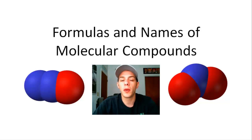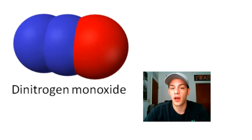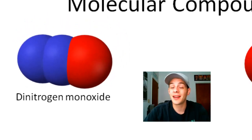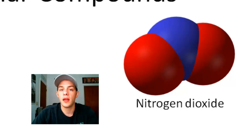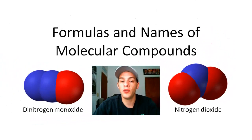I'd like to start by talking about two molecules on screen. The molecule on the left is dinitrogen monoxide. Each molecule of dinitrogen monoxide consists of two nitrogen atoms, shown here in blue, and one oxygen atom, shown here in red. The molecule on the right is nitrogen dioxide, and each molecule of nitrogen dioxide has one nitrogen and two oxygen atoms.